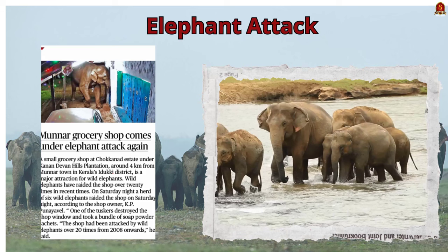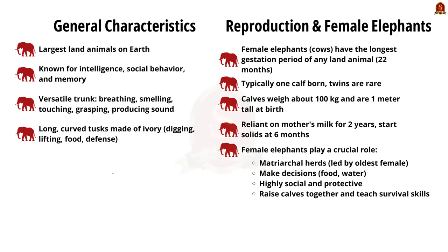What are the general characteristics of an elephant? Elephants are the largest land animals on Earth. They are known for their intelligence, social behavior, and impressive memory. An elephant's trunk is a versatile tool used for breathing, smelling, touching, grasping, and producing sounds. Elephants also have long curved tusks made of ivory used for digging, lifting objects, gathering food, and for defense.